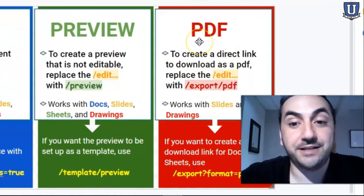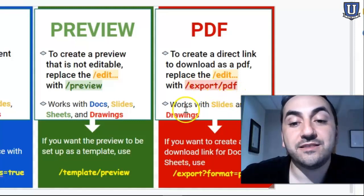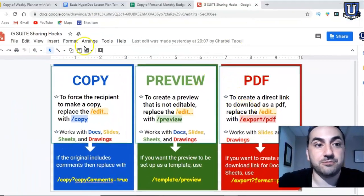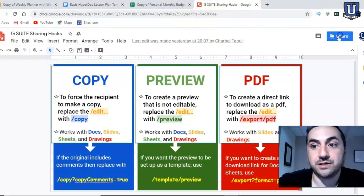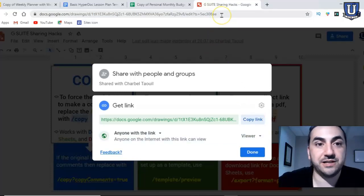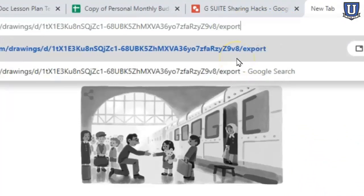Finally, the PDF option — I didn't know about this one and I think it can come in handy. We're going to replace the ending with 'export/pdf'. This creates a direct download link for our slides or drawings so that as soon as the recipient clicks that link it automatically starts downloading the PDF to their device. For this example, I'll use this Google Drawing here — share it so anyone with the link can see it, copy the link, and change the ending to 'export/pdf'.